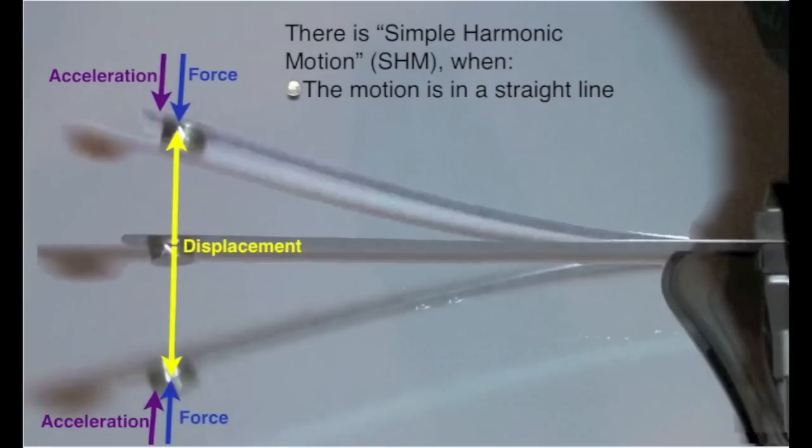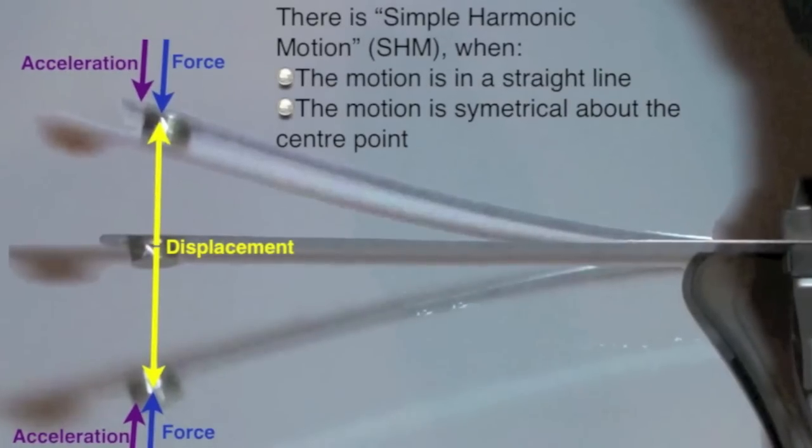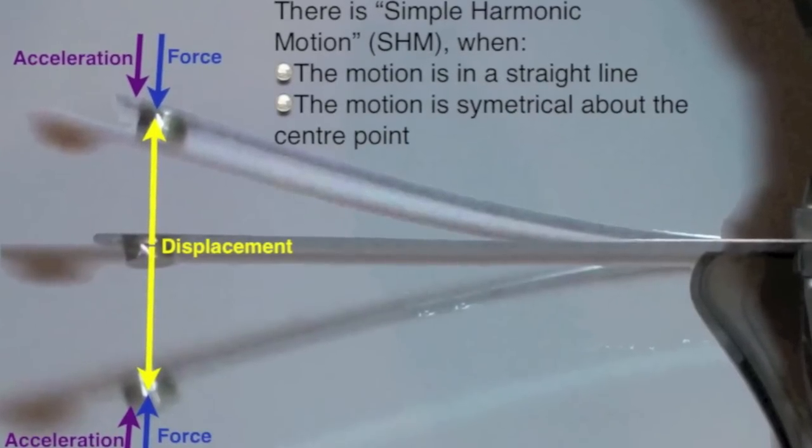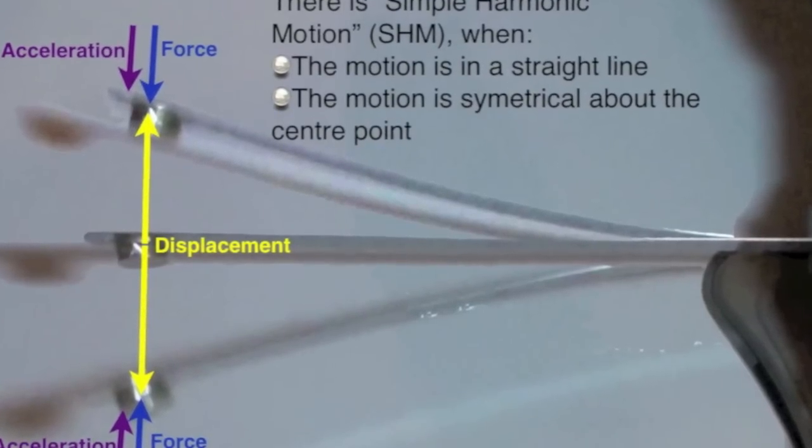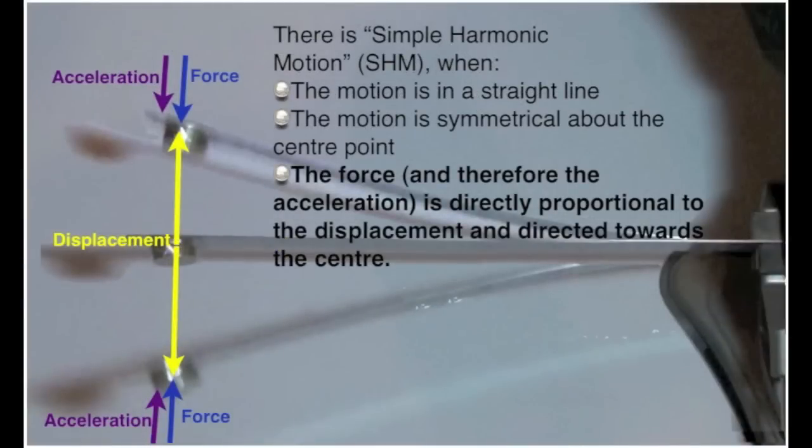These descriptions give us an overall definition of simple harmonic motion. That is, it is simple harmonic motion when the motion is in a straight line, when the motion is symmetrical about a center point, and when that force and therefore the acceleration that it causes is directly proportional to the displacement and is directed towards the center of motion. This will always happen if the material is an elastic material subject to Hooke's law.